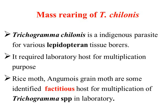Trichogramma is an indigenous parasite for various lepidopteran pest borers; hence we need a lepidopteran host in the laboratory for its multiplication. It requires a laboratory host as it is an obligate parasite. Scientists have tested more hosts for mass production of Trichogramma chilonis. The rice moth Corcyra cephalonica is a major host. Angoumois grain moth are identified as factitious hosts — meaning suitable hosts — for multiplication of the Trichogramma species. They are very easy to multiply in the laboratory and very cost-effective.